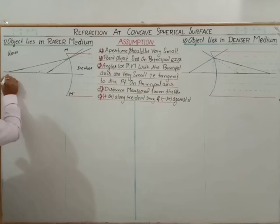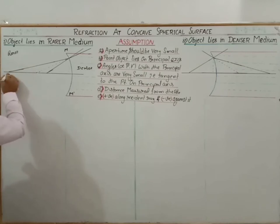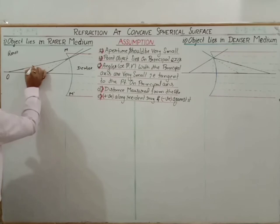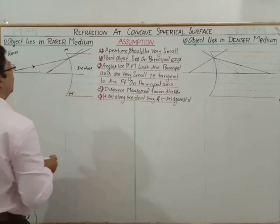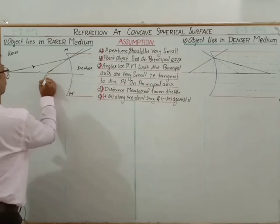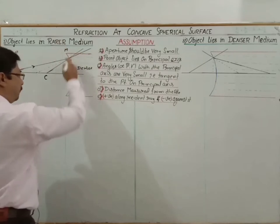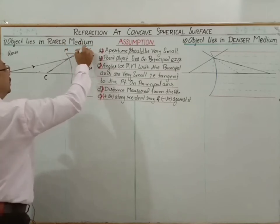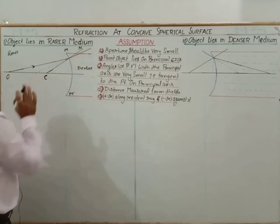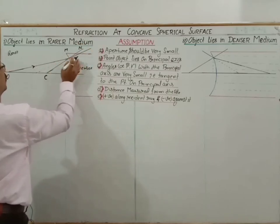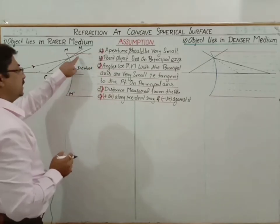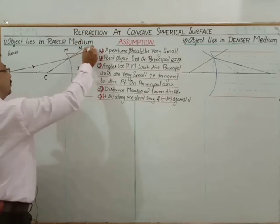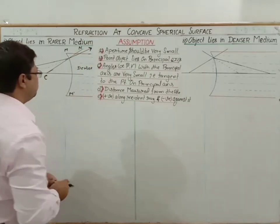In the ray diagram, the object is placed on the principal axis — a point object on the principal axis. The incident ray hits the surface, and the normal at the point of incidence comes from the center of curvature C. The line from center of curvature to the surface makes a normal — that is 90 degrees with the tangent. Since the ray is moving from rarer to denser medium, it bends towards the normal.